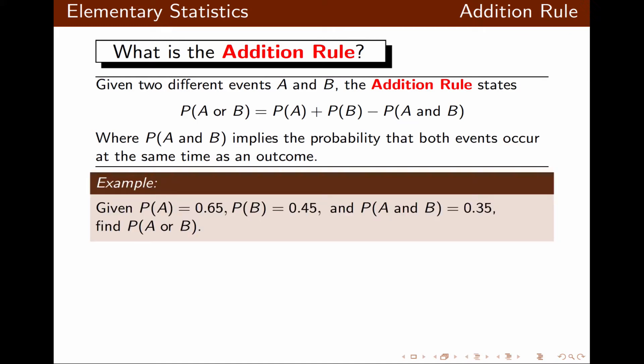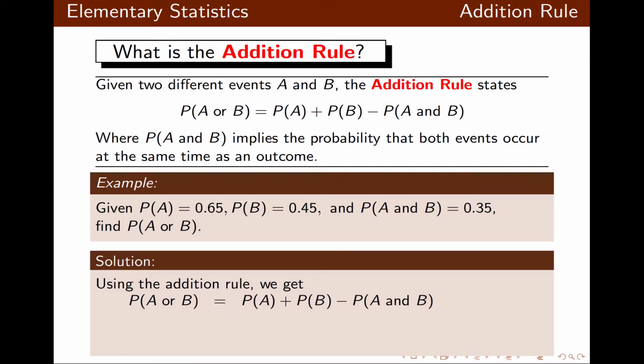For example, if the probability of A, B, and probability of A and B are given, we want to find probability of A or B. By using the addition rule, we simply do some calculations, and in this case, probability of A or B becomes equal to 0.75.